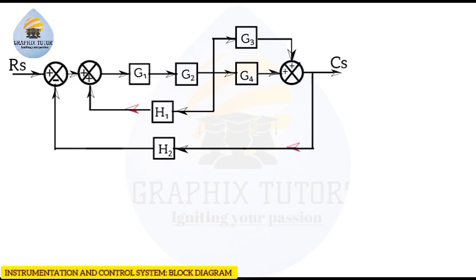It has one negative feedback and one positive feedback. The positive feedback is shown here, and the negative feedback is shown here. It also has a takeoff point here — this is what we call a takeoff point. So the question is: how can we reduce this block diagram?